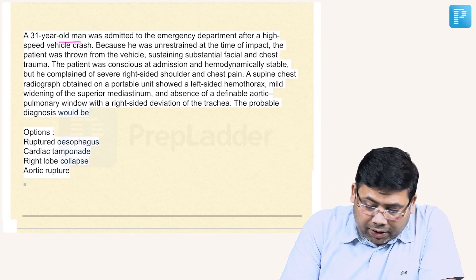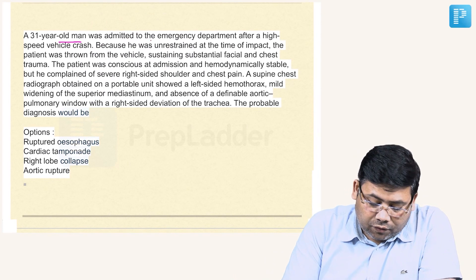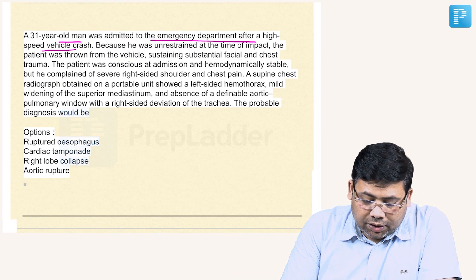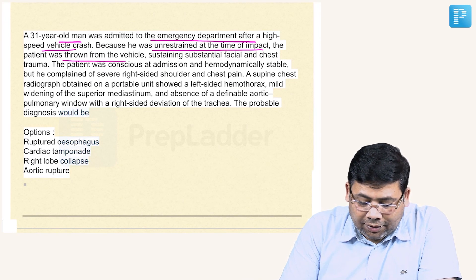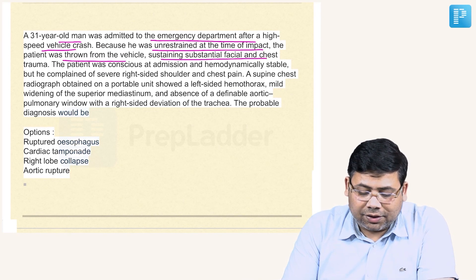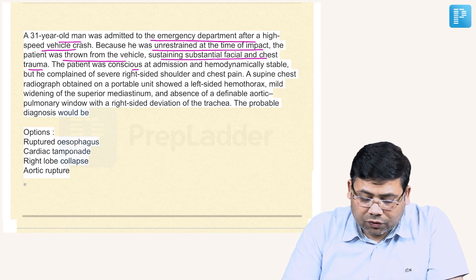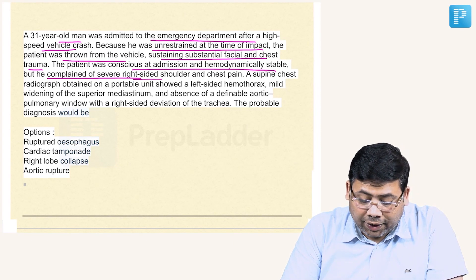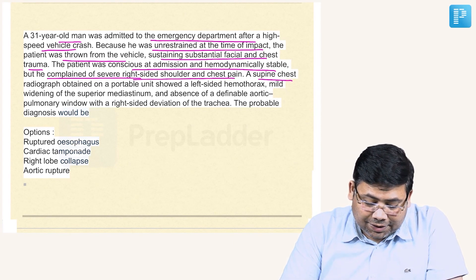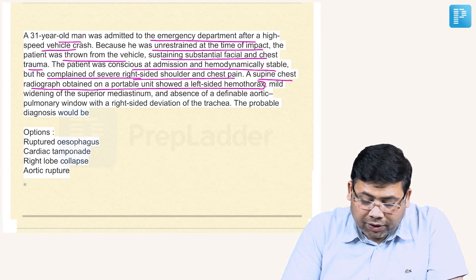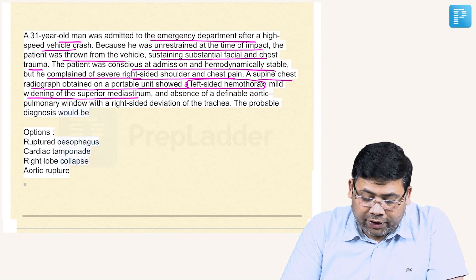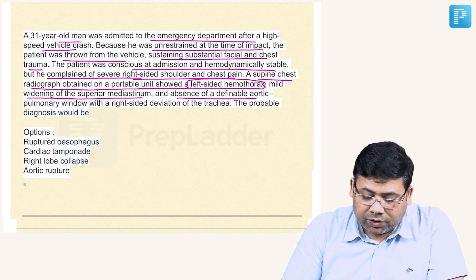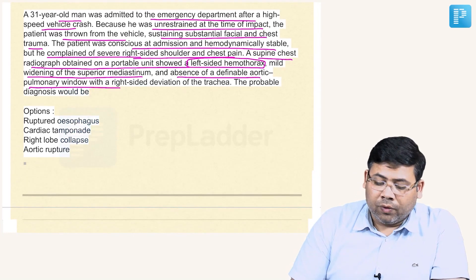Moving to the next question: a 31-year-old man was admitted to the ER after a high-speed vehicle crash. He was unrestrained at the time of impact and was thrown from the vehicle, sustaining substantial facial and chest trauma. The patient was conscious and hemodynamically stable, but complained of severe right shoulder and chest pain. A supine chest radiograph showed left hemothorax, mild widening of the superior mediastinum, and absence of a definable aortopulmonary window.